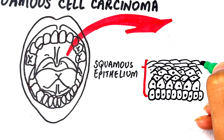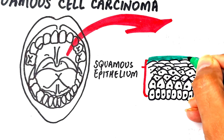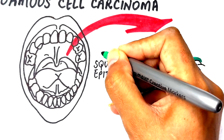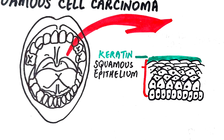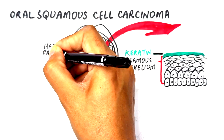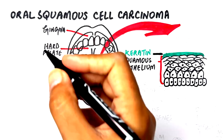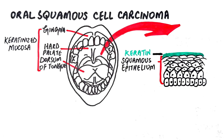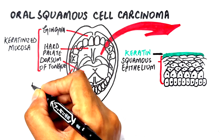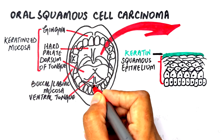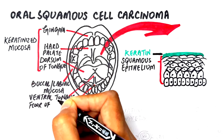Depending on the location, the oral epithelium may be keratinized or non-keratinized. Keratinized tissue has a proteinaceous layer of keratin on top that protects the tissue from wear and tear, such as on the hard palate, gingiva, and the dorsal surface of the tongue. Non-keratinized epithelium is seen on the buccal and labial mucosa, and the lateral and ventral borders of the tongue and floor of the mouth.